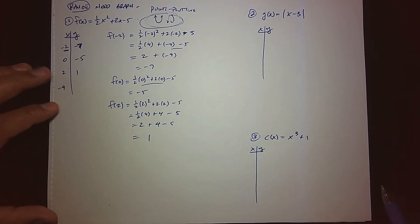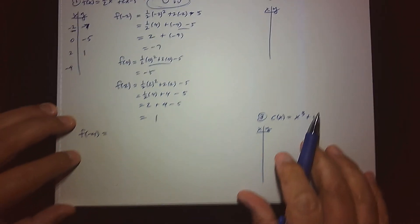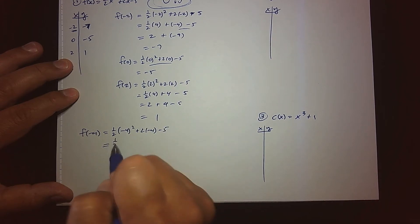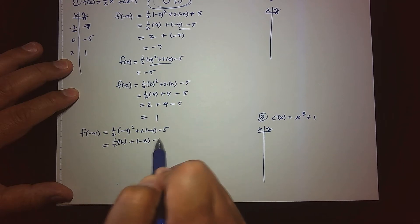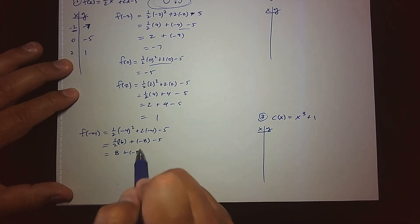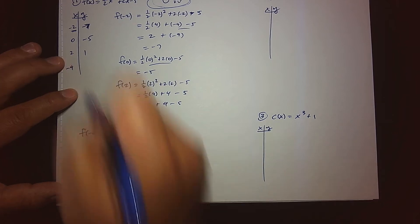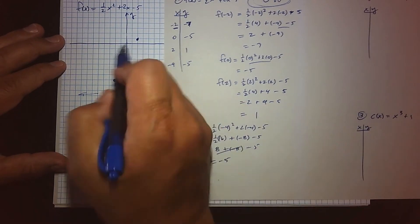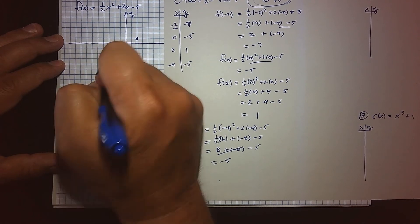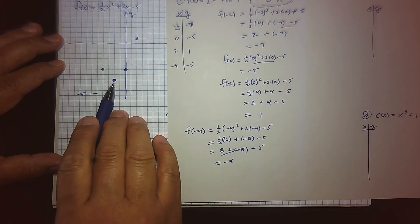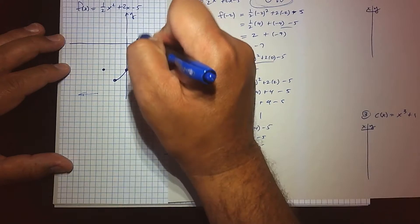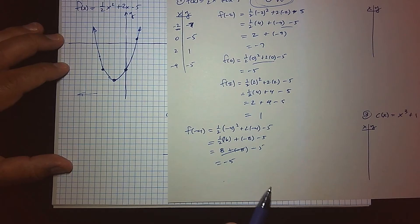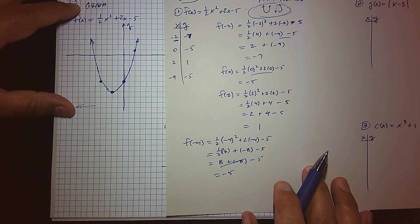We already have negative 2, so let's throw in negative 4. f of negative 4: one half of 16 is 8, plus negative 8, minus 5, which gives us negative 5. So another data point is (negative 4, negative 5). Going back to the grid, I plot that point and now I can see the bottoming-out point. It looks like the vertex is right there, and my u-shape is established. You could plot more points, but once you see the u-shape we pretty much know what the graph looks like.